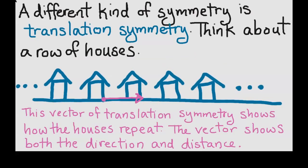Now a different kind of symmetry is called translation symmetry. We can think about a row of houses. In the pink, I've drawn the vector of translation symmetry, which shows how the houses repeat. The vector shows both the direction and the distance.